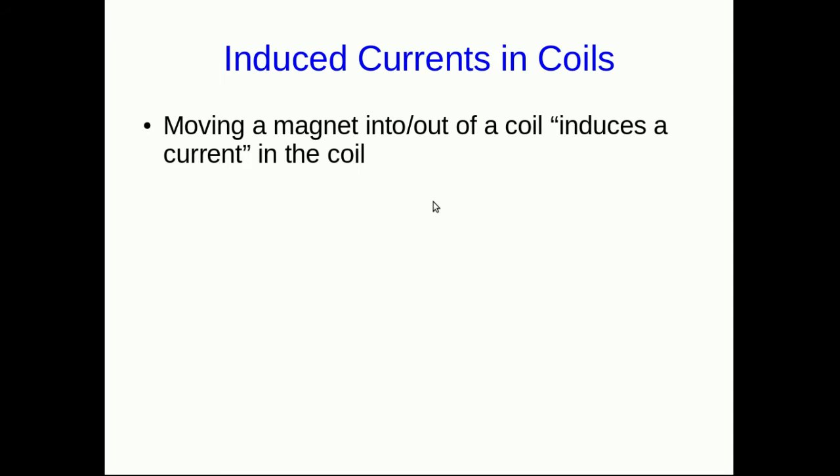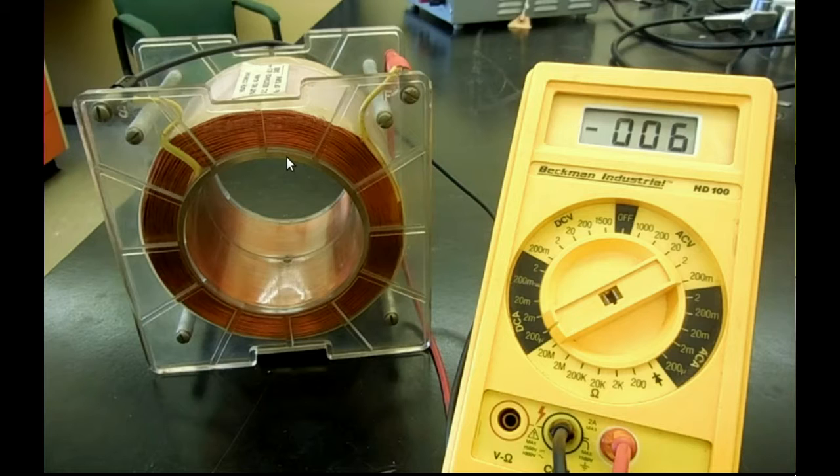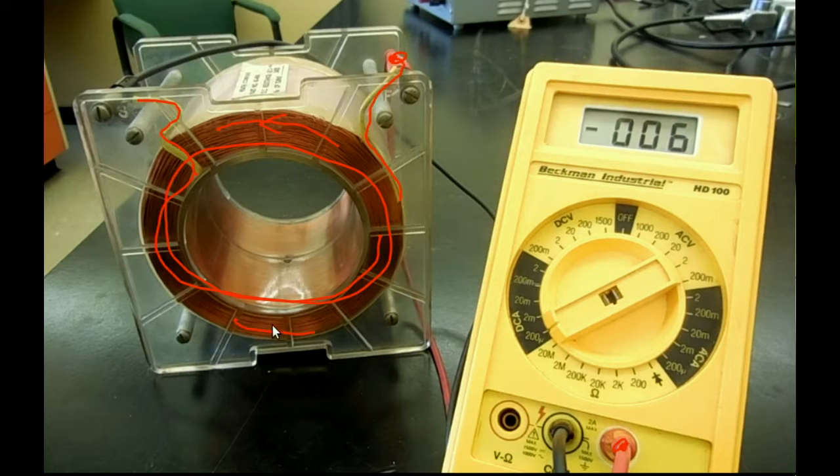We're going to start with an observation that moving a magnet into or out of a coil of wire can induce a current in the coil. So I've set up a coil here with an ammeter and if you look at the connections you can see that this wire comes into the coil and goes around this way and eventually comes out here and there is the positive connection to the ammeter. And so that tells you that if current is going counterclockwise around this coil it's going to show up as a positive current.